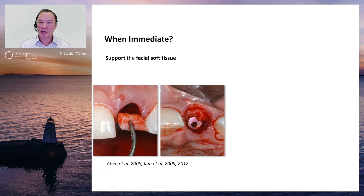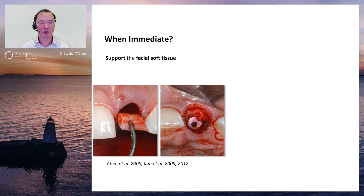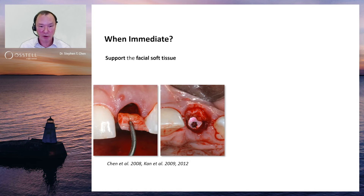The soft tissues can collapse once a tooth is extracted. With immediate implants, various techniques have been described to support the soft tissues. One way is to use a connective tissue graft — connective tissue is harvested from the palate, the implant is placed, the graft is inserted into the facial defect, and a piece of connective tissue is used to support the soft tissues. This is very effective, but involves a second surgical site, which can be uncomfortable for patients.